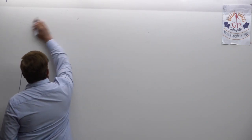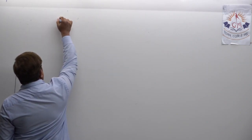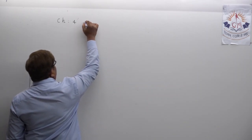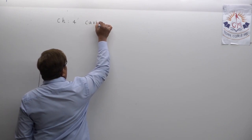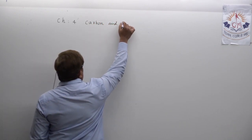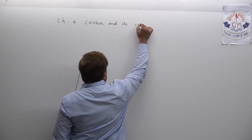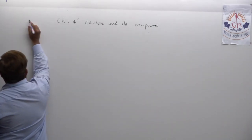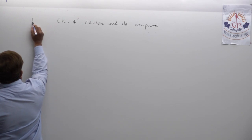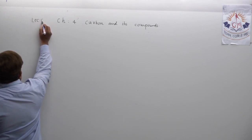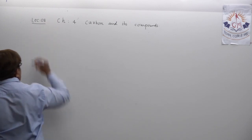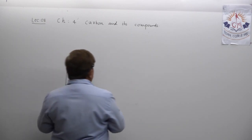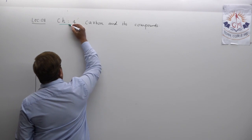Let us mention the title of the chapter again: Chapter Number Four — Carbon and Its Compounds. In this particular chapter, after covering so many topics, today you are attending lecture number eight. Today we are going to discuss the topic of Properties of Organic Compounds. The topic number is 4.3.